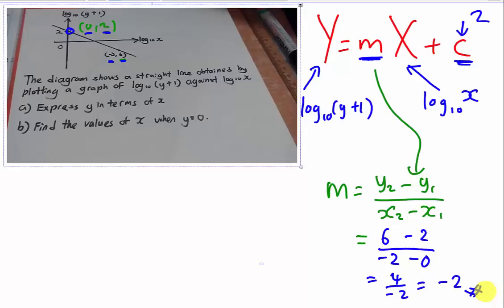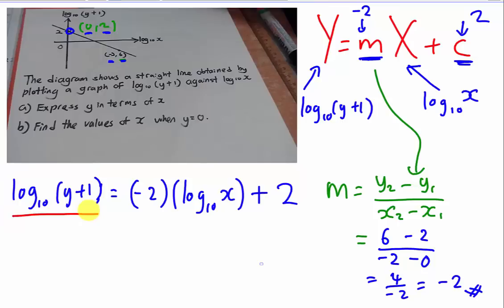Now I get my m is equal to negative 2. Everything will look very easy now. So I just need to solve it and make sure I have the equation, express y in terms of x. So I just substitute everything in here. So I have log10(y+1) which is my y, equals to my m is negative 2 and my x is log10(x) plus my c is 2. You see actually everything is very simple. This is my y, my m, my x and my c.